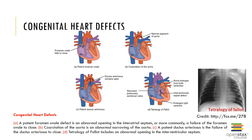Congenital heart defects include a foramen ovale defect, which is an abnormal opening in the interatrial septum — more commonly a failure of the foramen ovale to close. Other congenital defects include patent ductus arteriosus and tetralogy of Fallot, which includes an abnormal opening in the interventricular septum.